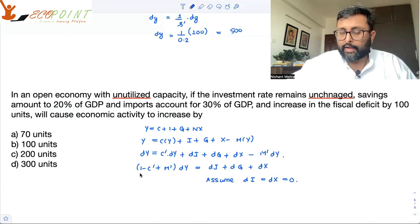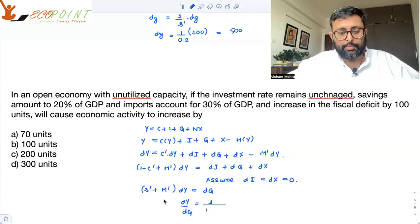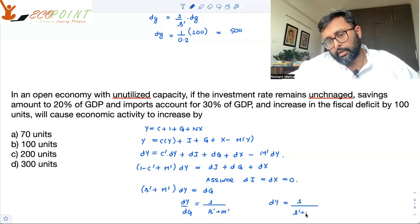So there is no change in investment, no change in exports, so we will assume them to be zero. And MPC plus MPS is equal to one, so one minus MPS is this. So dy by dg is one upon s dash plus m dash, or change in income is going to be one upon s dash plus m dash dg.